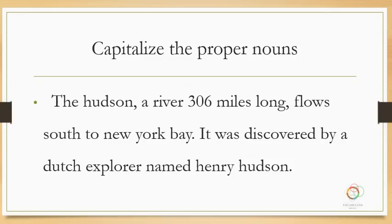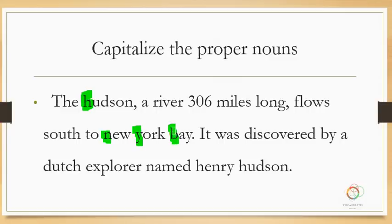Let's try some exercises — capitalize the proper nouns. Which of these words need to be capitalized? Anything that is a name needs to be in capitals. 'The Hudson' — a river 306 miles long — the Hudson is the name of the river, so we need to capitalize that. It flows south — south is just a direction here, though sometimes you capitalize south if it's part of a name. To New York, which we know is a name, so we capitalize that. Bay is part of the name New York Bay. It was discovered by a Dutch explorer — Dutch refers to a country, so we capitalize that, but not the word explorer. Henry Hudson is the name of a person, so we capitalize that.